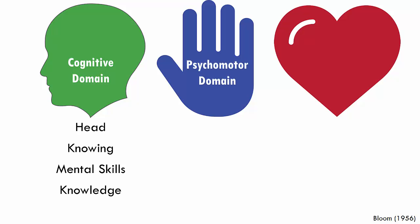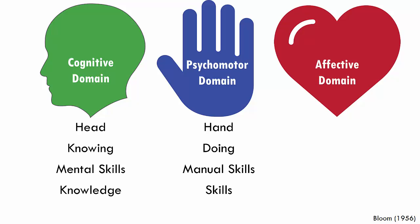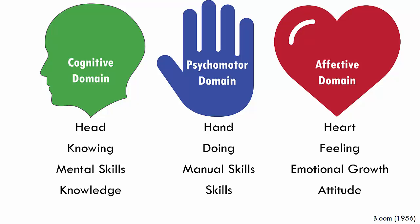The psychomotor domain covers basic motor skills, coordination, physical movement, speech development, reading readiness, handwriting, physical education, and so on. And the affective domain has to do with the heart — feeling, emotional growth, and attitude.